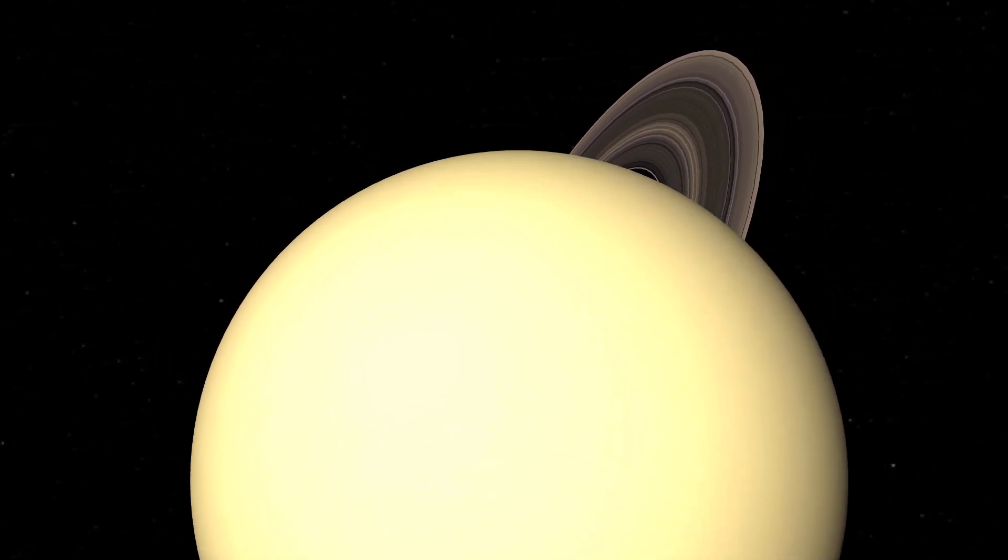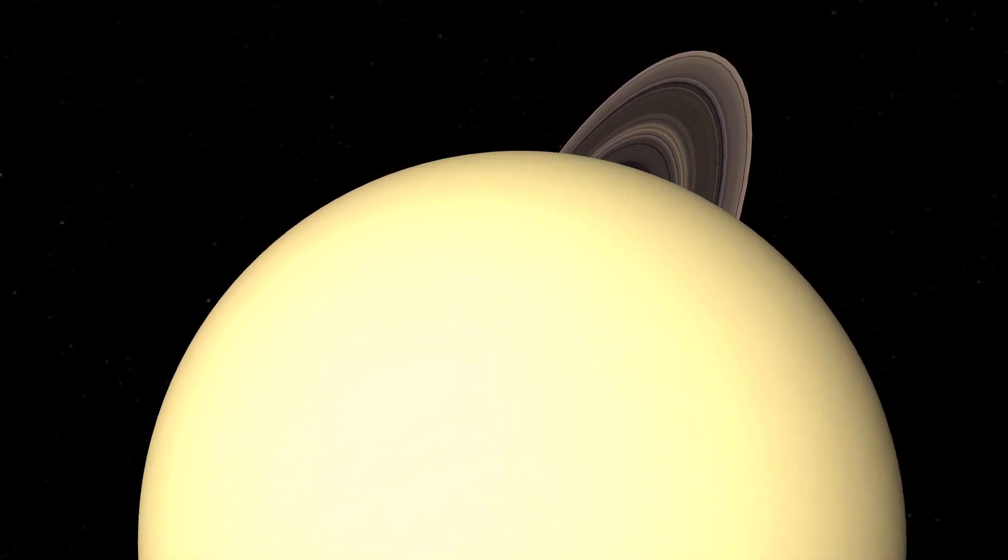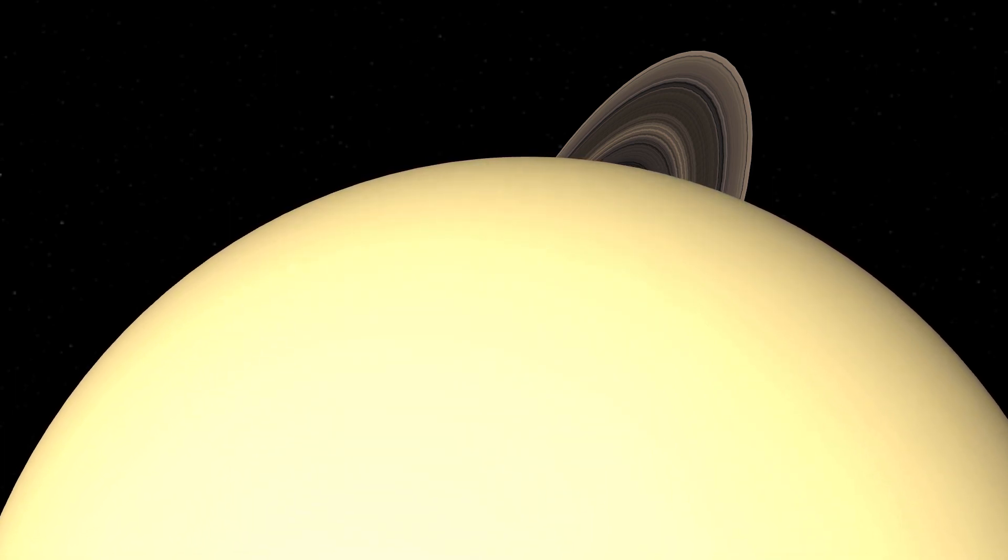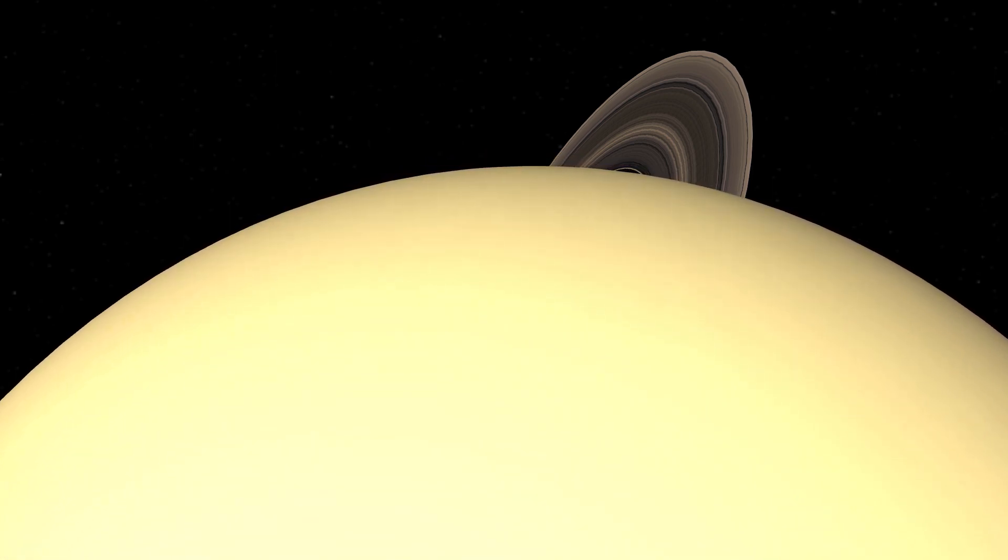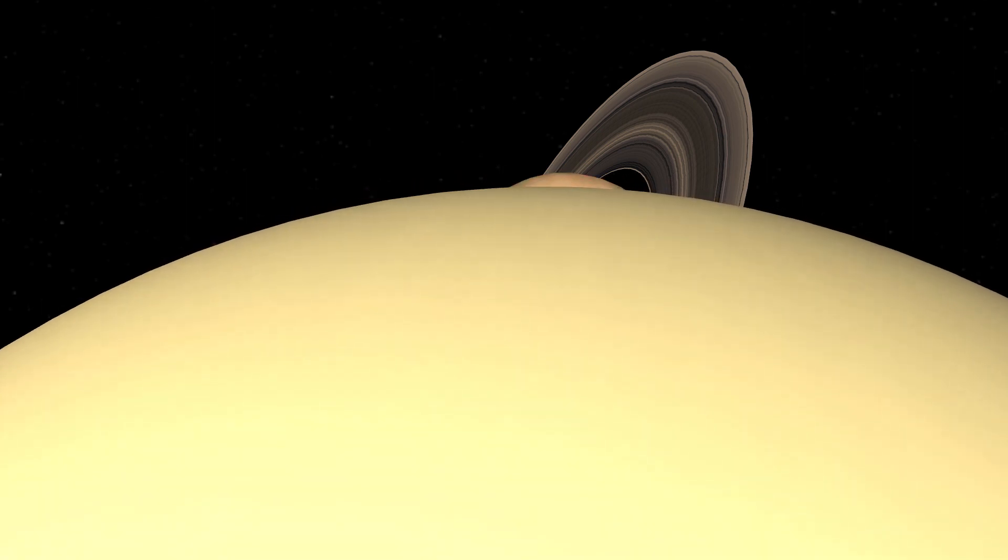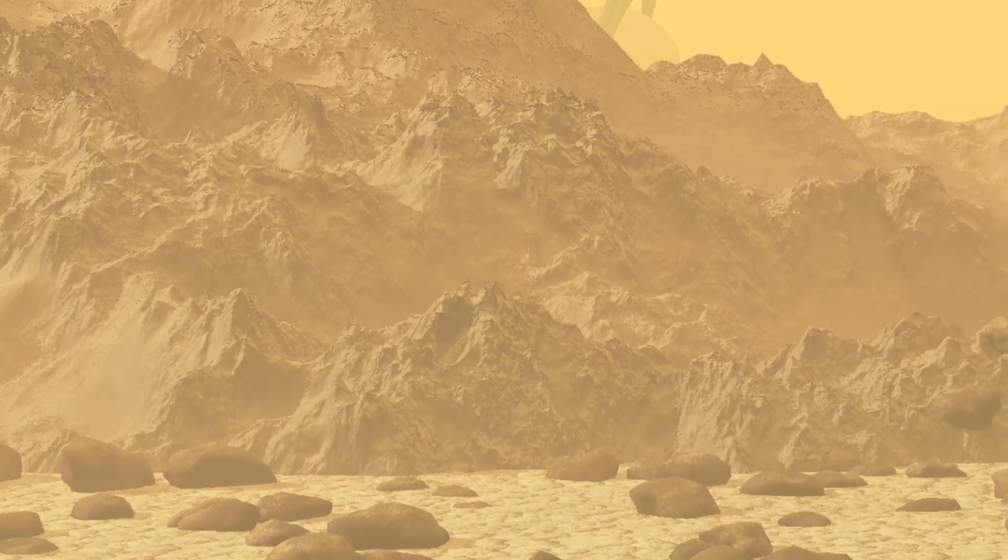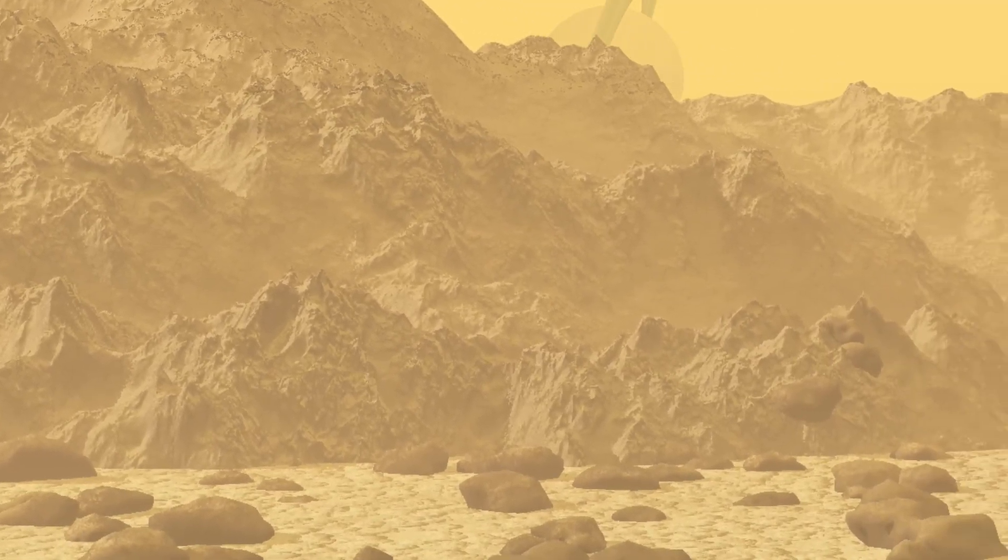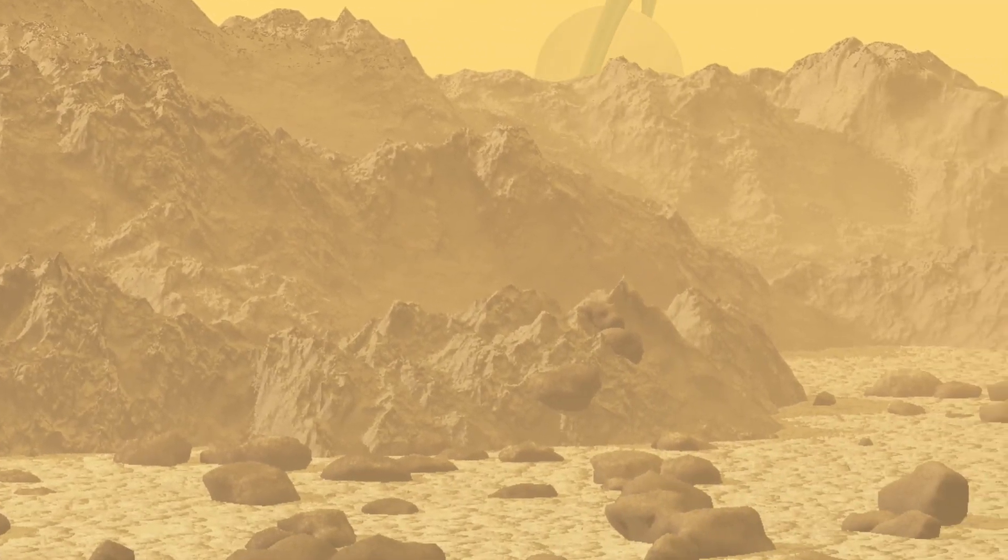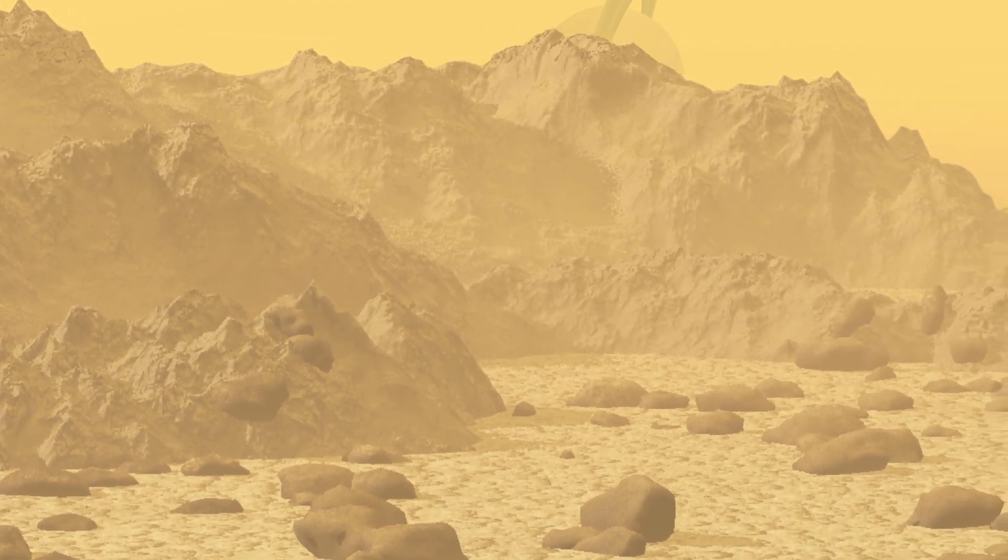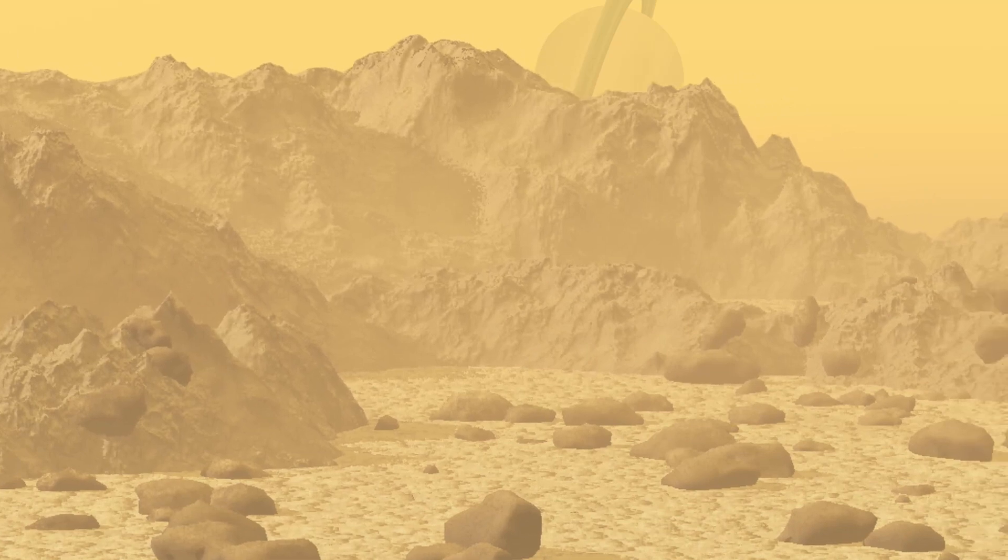Not only that, but when Voyager 1 flew by 23 years earlier, it also detected organic molecules in the atmosphere and the potential for organic oceans and lakes. Titan looks a lot like Earth before life took hold and changed the atmosphere and surface. Since the average temperature on Titan is minus 180 degrees Celsius, the potential for biological development is very unlikely.